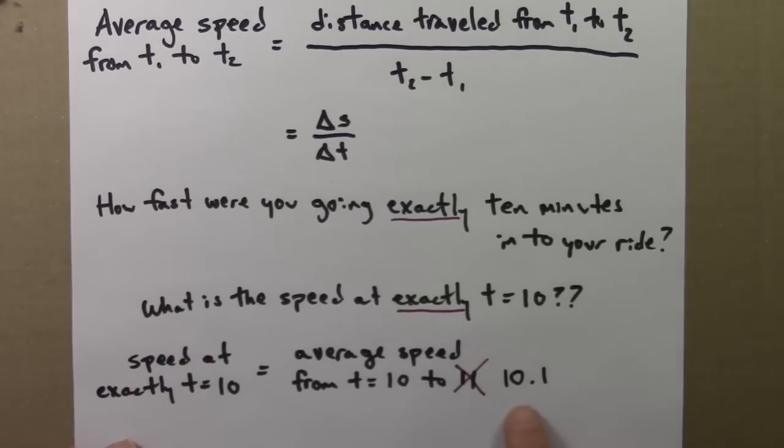And you might object again. Well, how do you know? Maybe you're speeding up or slowing down a lot. Maybe you stopped for just an instant in here, so that this average speed is not a good representation, is not a good approximation to this exact speed.